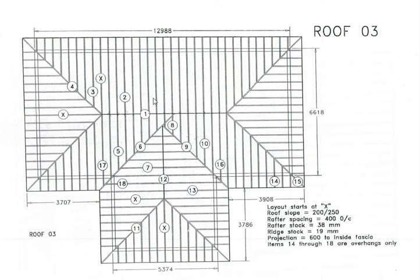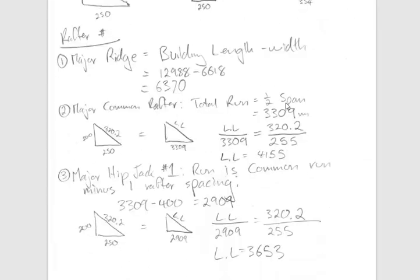The second rafter to calculate is the common rafter. We're not doing the overhangs here — those come at the end with rafters 14 through 18. The run of a common rafter is half the span of the building, so with a span of 6618 we cut that in half and take that back to our ratio triangle. Here's half the span — 3309 — and using our magic triangle we find that the line length of the common rafter is 4155.